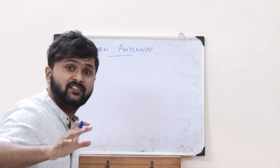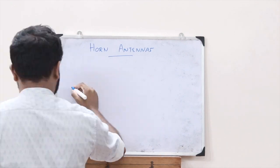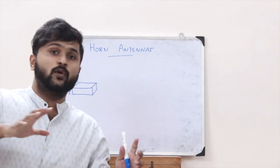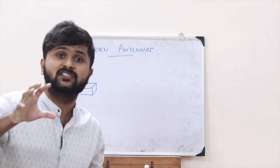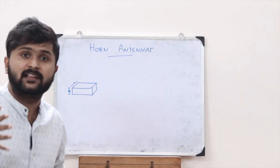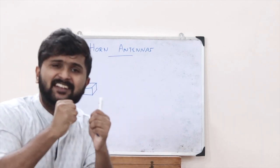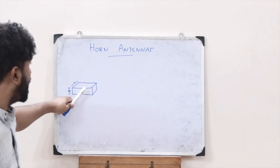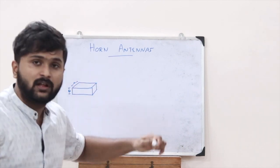Let us look into the structure of a horn antenna. First, let us consider the following waveguide. A waveguide is basically a structure that guides electromagnetic radio waves in a particular direction by restricting the transmission in one particular direction.